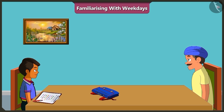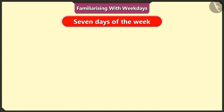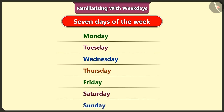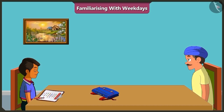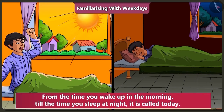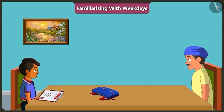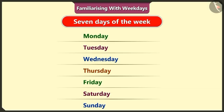I didn't understand. First of all, write the days of the week on a piece of paper. I wrote down the names of the seven days of the week. Now tell me, what day is today? From the time we wake up in the morning till the time we sleep at night is called today. So, which day of the week is today? Today is the first day of the week — it means Monday. We will circle Monday and write 'today' next to it.